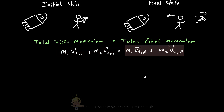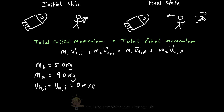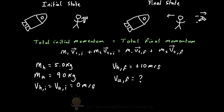Let's add some real values to this problem. The mass of our hammer is 5.0 kilograms, and the mass of our astronaut is 90 kilograms. The initial velocity of both the hammer and astronaut is 0 meters per second. In the final state, you're able to throw the hammer at 10 meters per second. Considering that momentum is conserved, what would be the speed of the astronaut moving backwards?